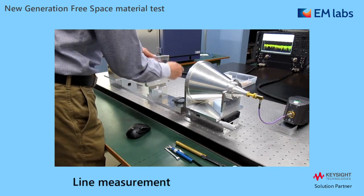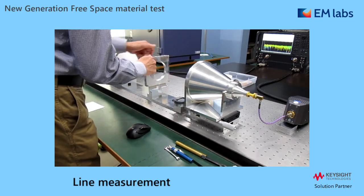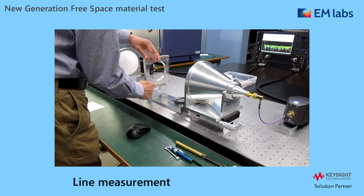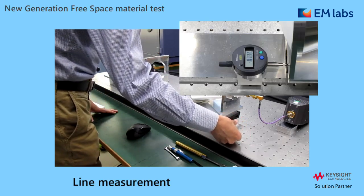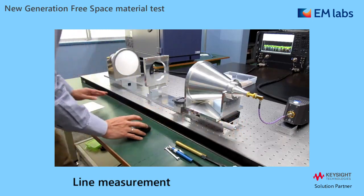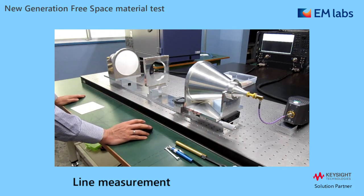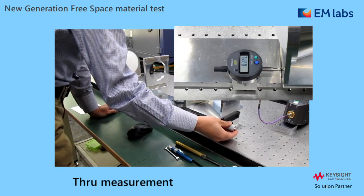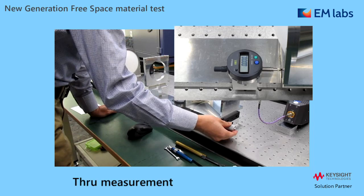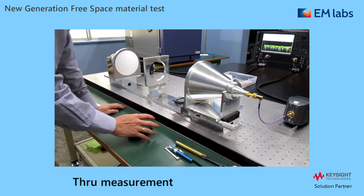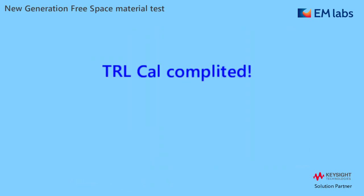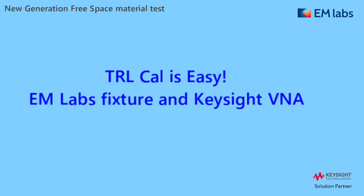The next step is line. Remove the plate first. We measure about a quarter wavelength in air, so change the antenna position accordingly, and trigger. Finally, for the through measurement, it's a direct connection, so just return the antenna position to 0 and trigger. Calibration is now completed. You can see calibration is easy with our fixture and Keysight analyzer.